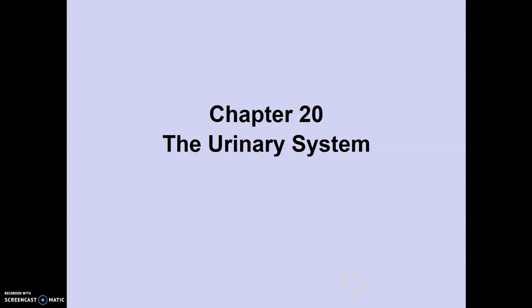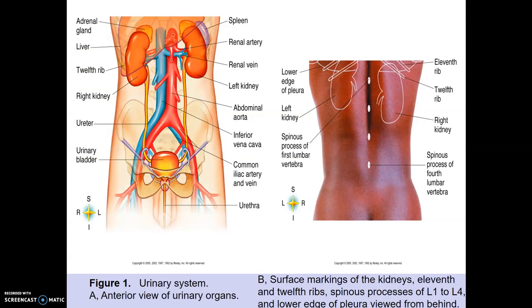Hello there, Bio50. We're going to be covering Chapter 20 on the urinary, or the renal system — it can be called either. We are going to be talking about the large gross anatomy of the renal system, the major organs, and then we are going to be talking about some of the microanatomy.